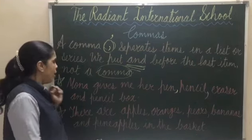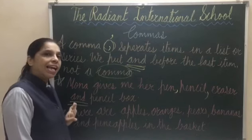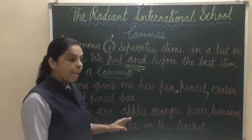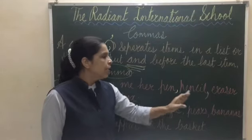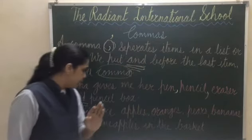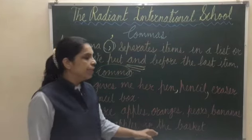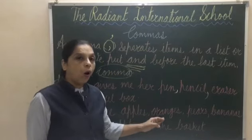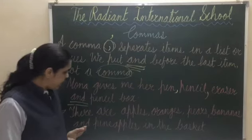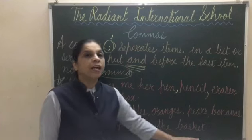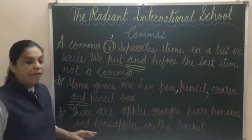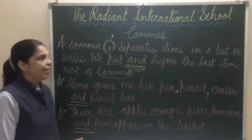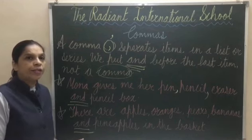So before the last item, we write 'and'. Next example: There are apples, oranges, pears, bananas, and pineapples in the basket. Here, before the last item 'pineapples,' we write 'and.' Last item ke pehle hum 'and' dalenge. Understood?